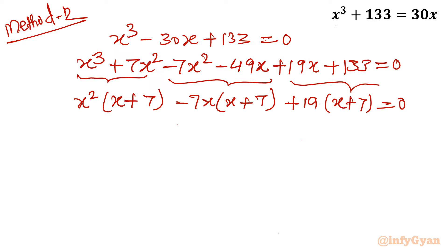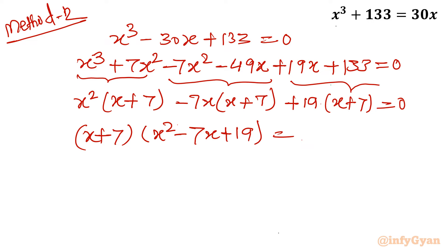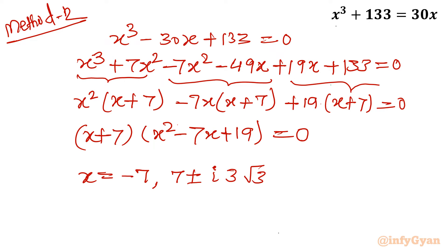A question arises: how do we know what number to add and subtract? That comes from the remainder theorem. We then get the same quadratic: x squared minus 7x plus 19 equal to 0, and solving it gives the same result — 7 plus or minus i times 3 root 3, divided by 2. Same solution as Method 1.